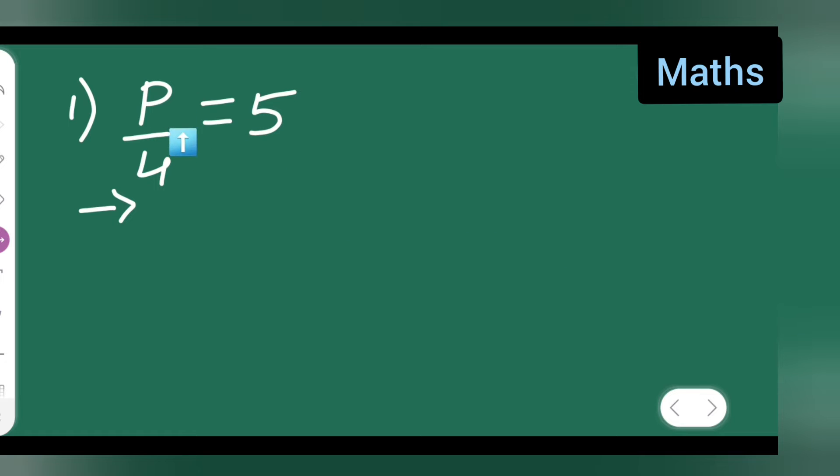You can take down the question P upon 4 is equal to 5. So, we have to find the value of P. So, what we have to do is write P is equal to 5 over here.